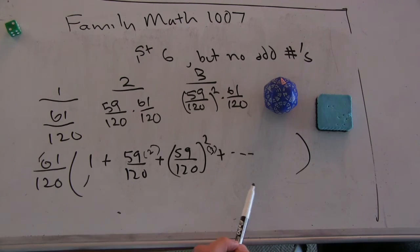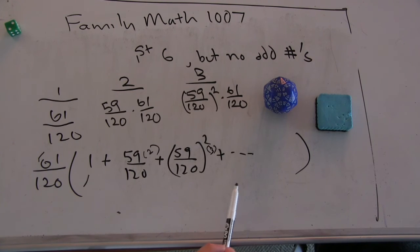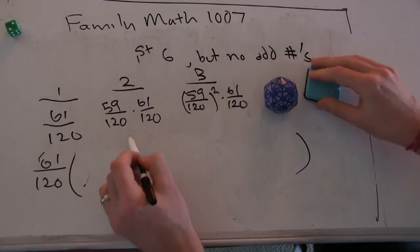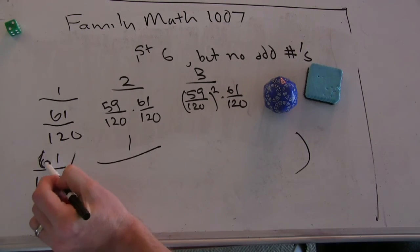What does this series equal? So 61 over 120 times 1 over 1 minus 59 over 120 squared. And what is 1 over 1 minus, what's going to be on the bottom? 61 over 120.